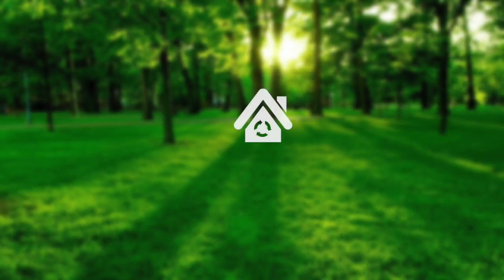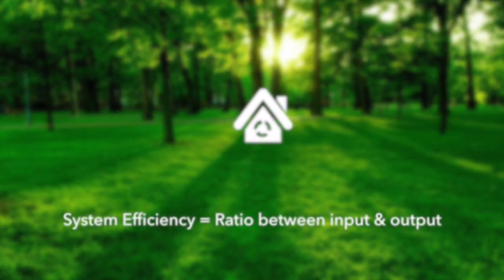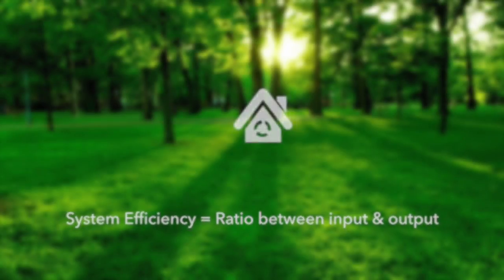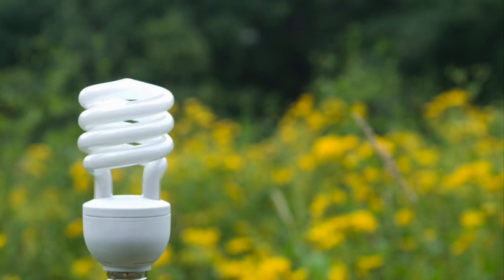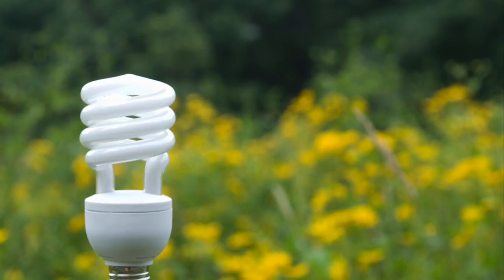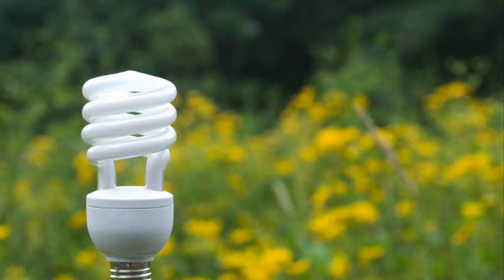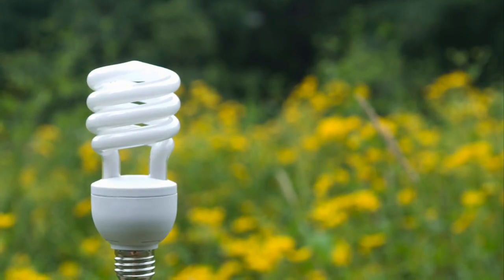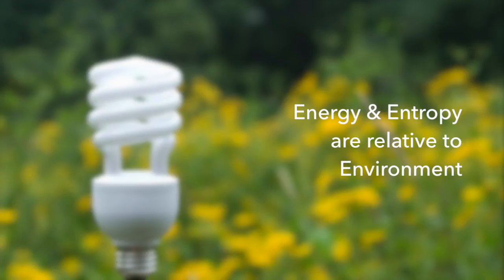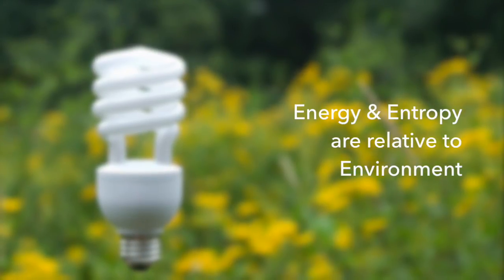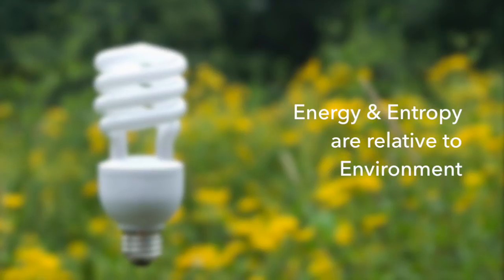So we can define system efficiency as a ratio between energy inputted and the energy outputted. But unfortunately, what is considered energy and what is considered entropy is by no means objective and is often relative to the system's environment. For example, a light bulb consumes electricity as its input and produces light as its output. Though not all electricity is converted to light — some is converted to heat energy. With respect to the light bulb as a light producer, this heat would be considered waste or entropy. But if we were interested in heating our house, then this excess heat energy may be considered a resource.